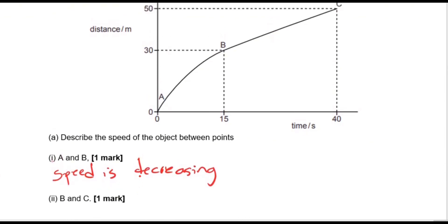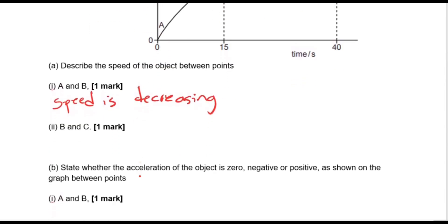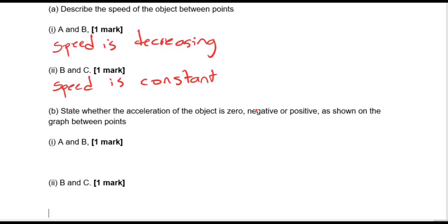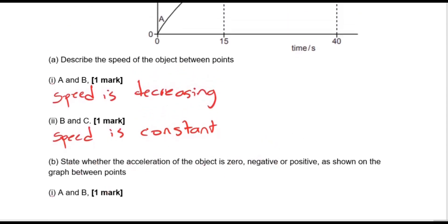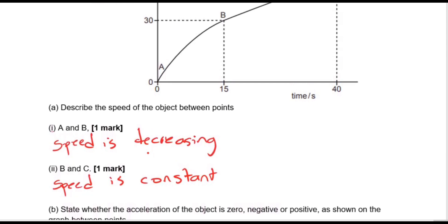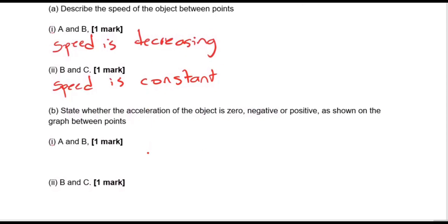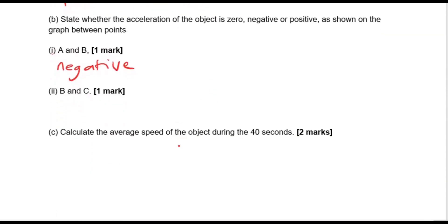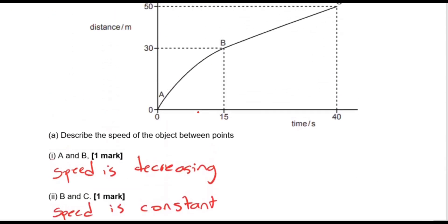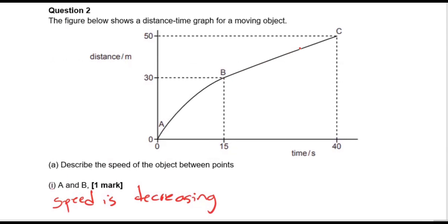From B to C, we have a diagonal straight line, and a diagonal straight line on a distance-time graph represents constant speed. Regarding acceleration: between A and B, since speed was decreasing, the object is slowing down — that means it is decelerating, which means it has negative acceleration. From B to C, where speed is constant, the object is not accelerating at all, so the acceleration is zero. It's zero because it is a straight line, telling us the speed remains the same value throughout that section of the journey.